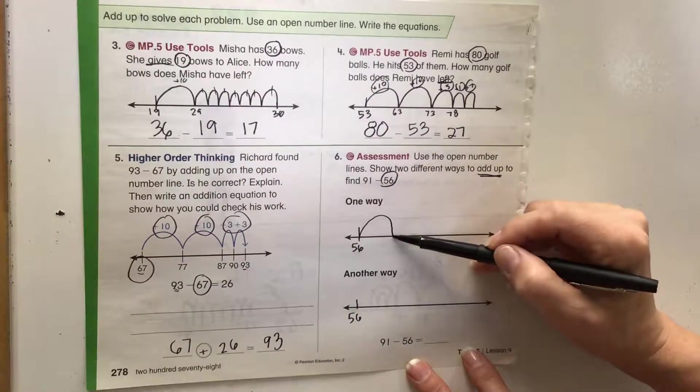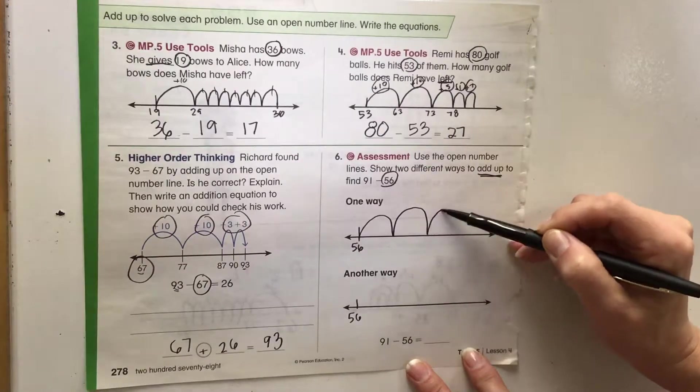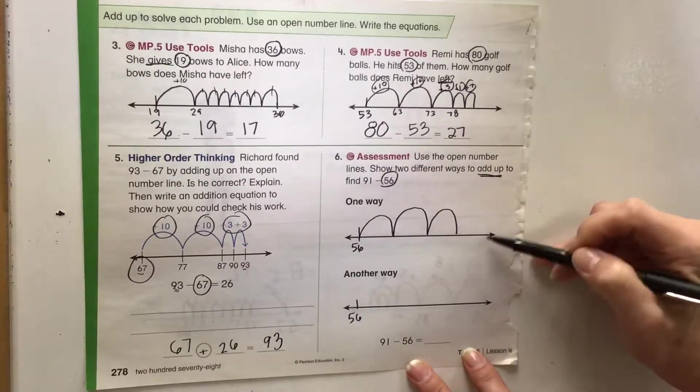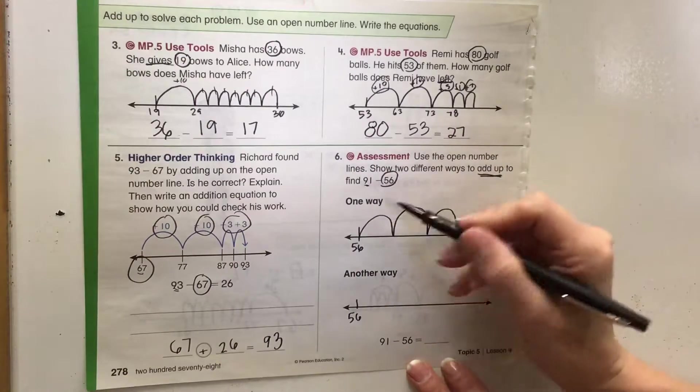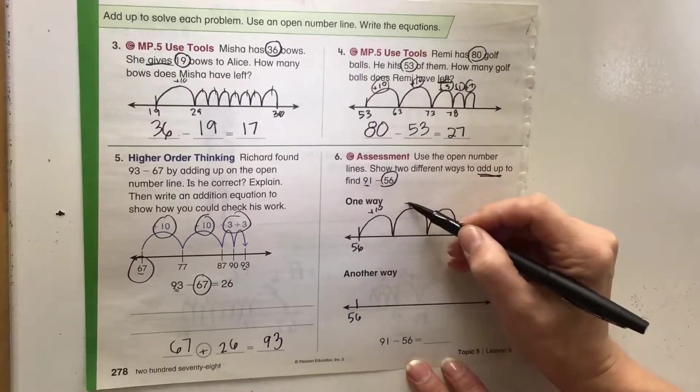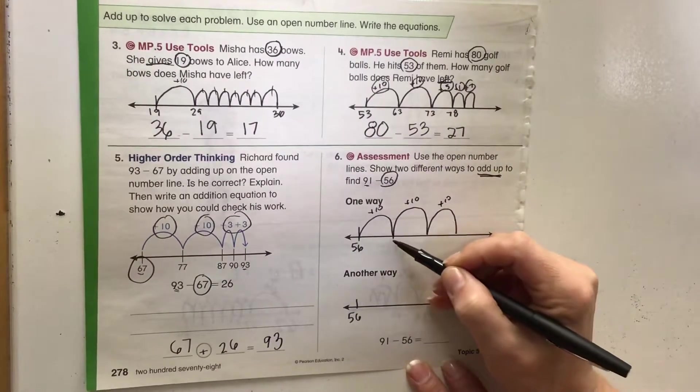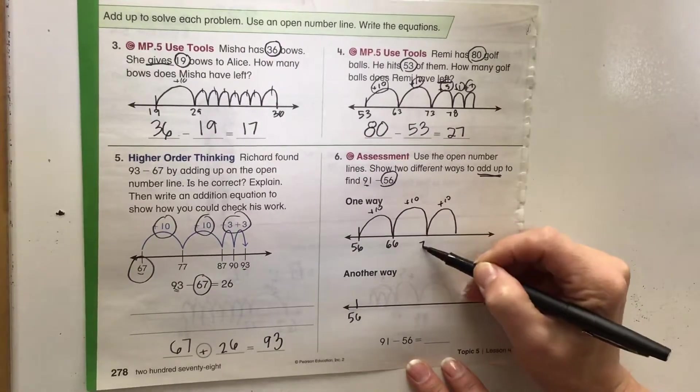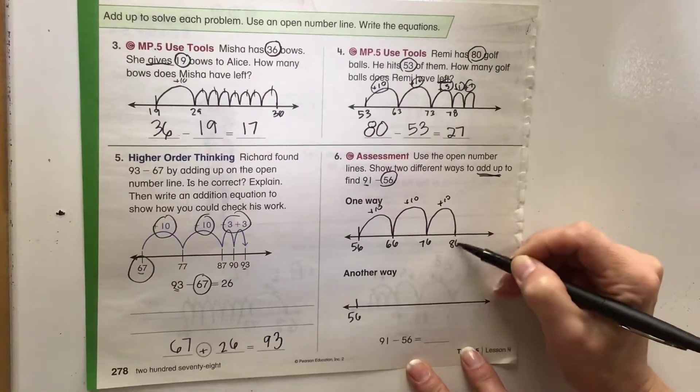I'm going to start counting by 10. So 56, 66, 76, 86. If I go one more to 96, that'll be too high. So here's my plus 10, plus 10, plus 10: 56, 66, 76, 86.